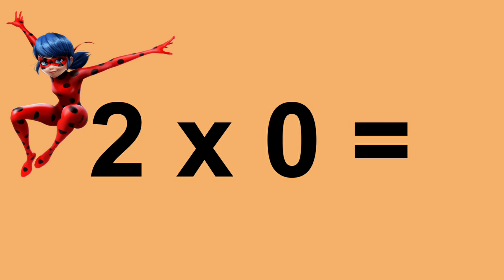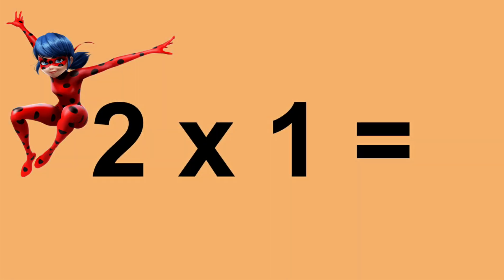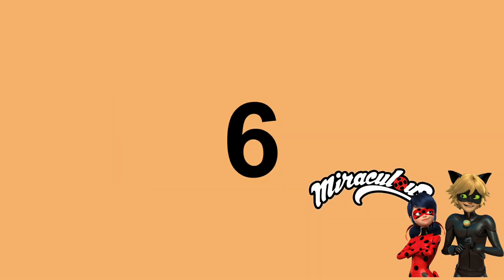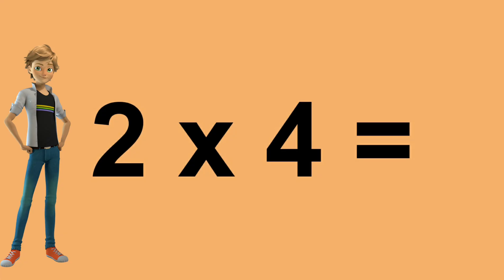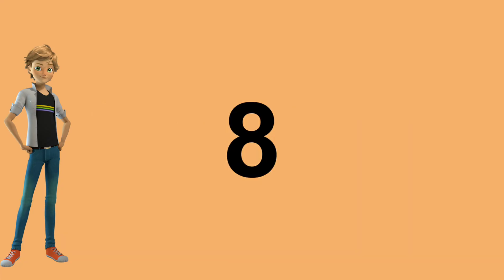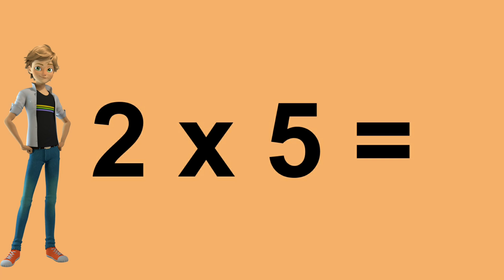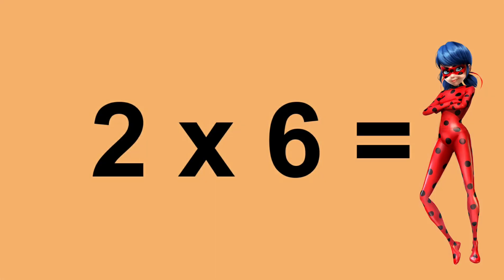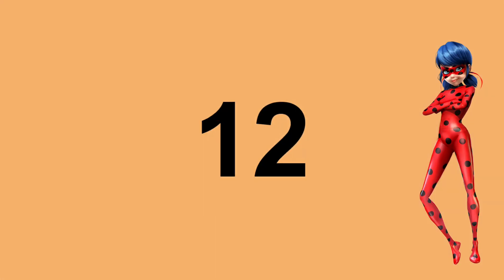Two times zero equals zero. Two times one equals two. Two times two equals four. Two times three equals six. Two times four equals eight. Two times five equals ten. Two times six equals twelve.